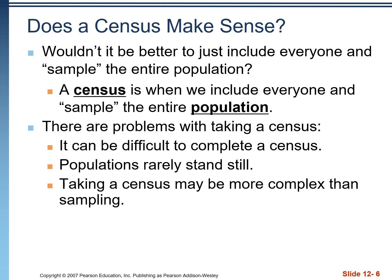Completing a census is very difficult. Populations rarely stand still — by the time a census is completed, the number of people in the country has changed: people have died, people have been born. In a lot of cases, taking a census may actually be more complex than sampling would be.